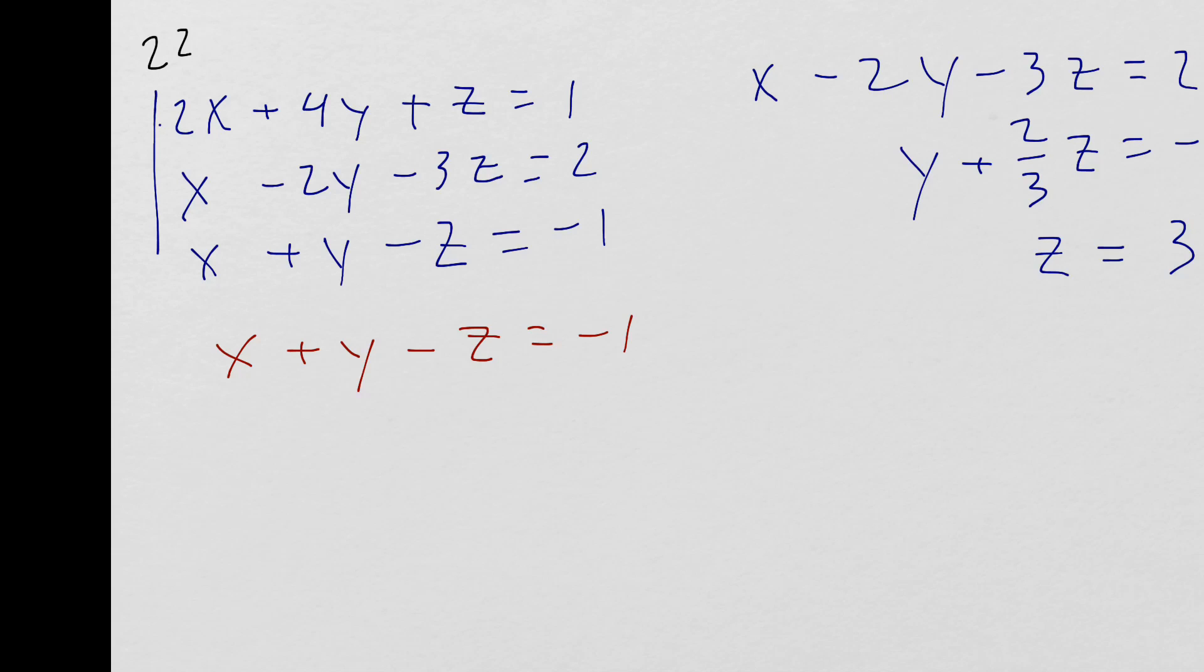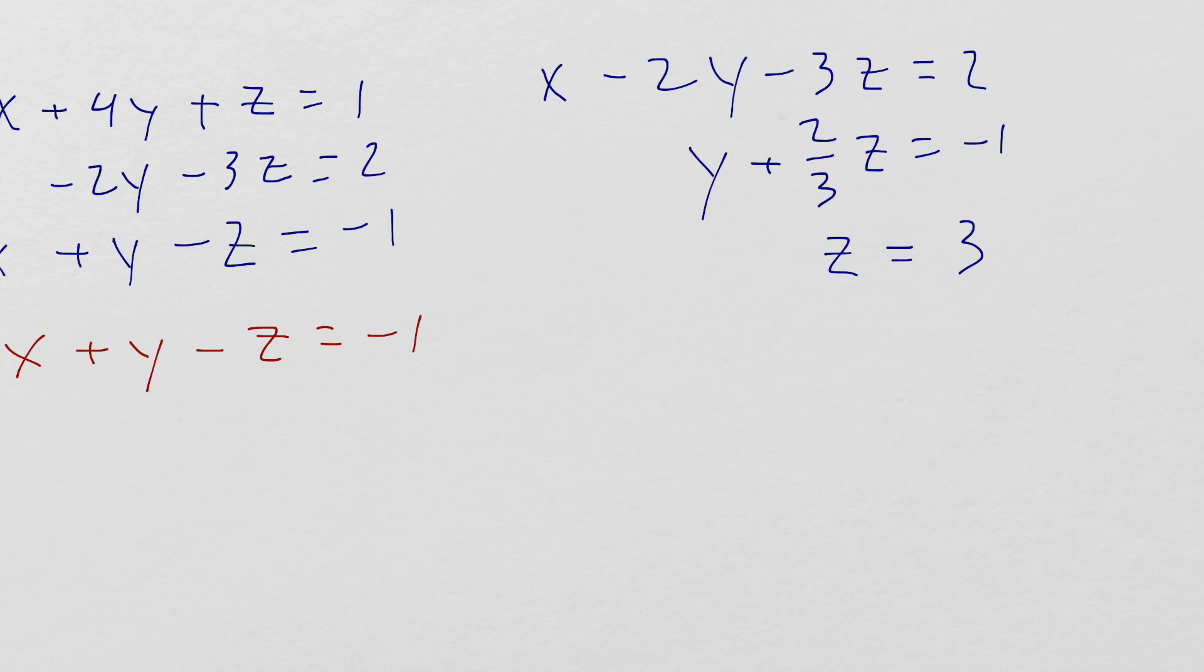I've wrote the equations down here. I chose the second one to be my first equation. It already has a 1 in front of the x, so I rewrote that right here: x minus 2y minus 3z equals 2.